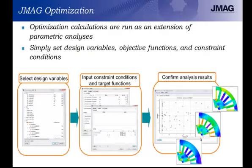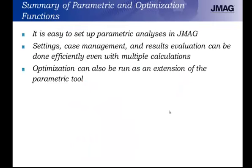JMAG optimization is effectively just an extension to the parametric tool. Instead of just setting the design variables, we can now apply objective functions and constraint conditions. JMAG will go through, based on the constraints and objective functions, define what parameters should be set, run the analysis, and display results in a handy table. It's easy to set up a parametric analysis in JMAG — settings, case management, and results evaluations can be done efficiently even with multiple calculations. Optimization can also be run as an extension of the parametric tool.